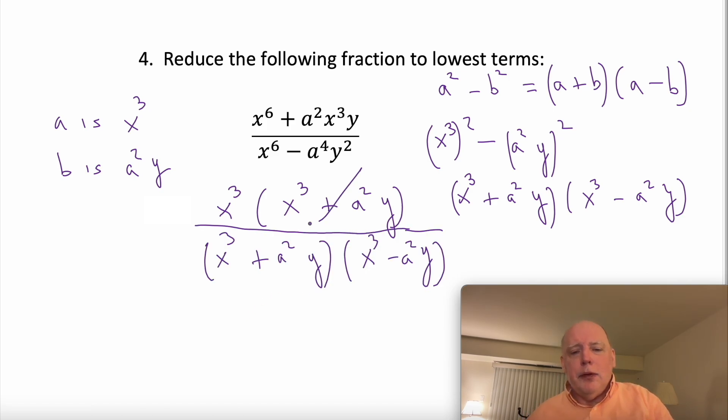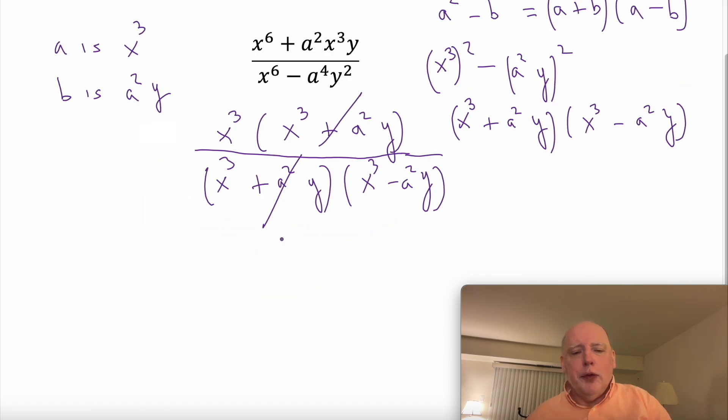And then we can cancel. What we're left with is x to the cubed over x to the cubed minus a squared y.